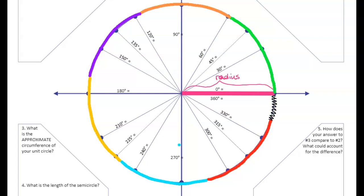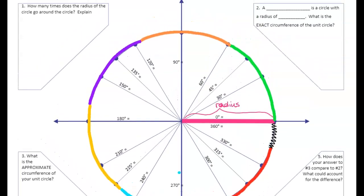Number one says: how many times does the radius of the circle go around the circle? Well, it went around one, two, three, four, five down here, six — and a little. So it went around a little more than six times.